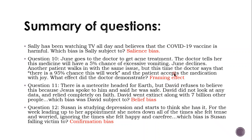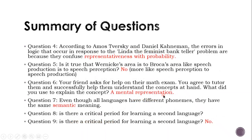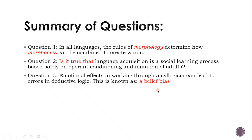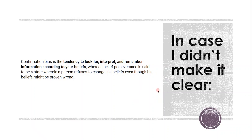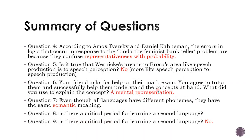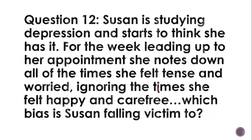We looked at the framing effect — the doctor got someone to take a medicine by changing how he framed the chances: he didn't mention the 5% chance of excessive vomiting, he just said '95% chance this will work.' Then we looked at belief bias, where you abandon logic and blindly believe something. Confirmation bias — the tendency to look for, interpret, and remember information according to your beliefs — is something to immunize yourself against. Belief perseverance is when a person refuses to change their beliefs even though they might be proven wrong. And that is pretty much it for psycholinguistics — hopefully you have learnt quite a bit. Thank you for watching.